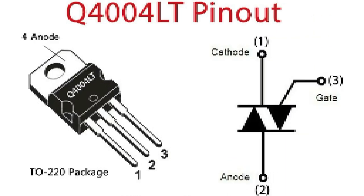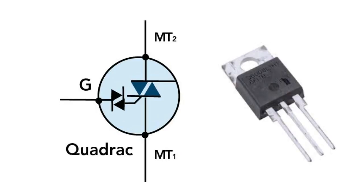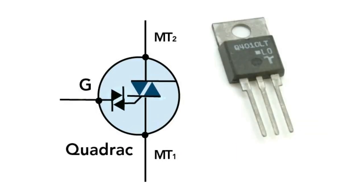The Quadrac is a 3-pin semiconductor device that features a MT1 main terminal, usually the anode, a MT2 main terminal, usually the cathode, and a G terminal gate.